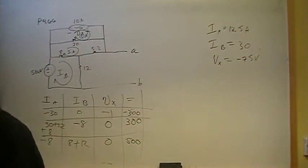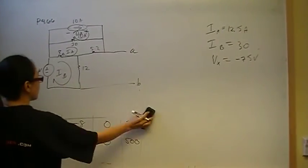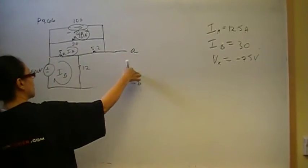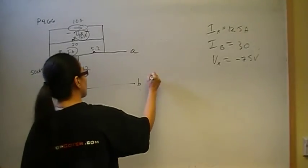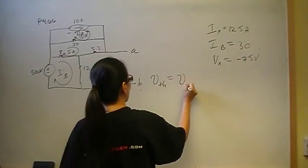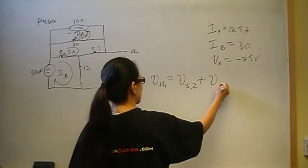Okay. So then what we were looking for was V-Thevenin. And we said V-Thevenin looking for this voltage drop or we're interested in these two points right here. So V-Thevenin then is the voltage drop across the 5.2 plus the voltage drop across the 12.